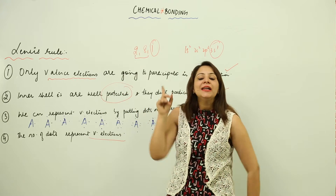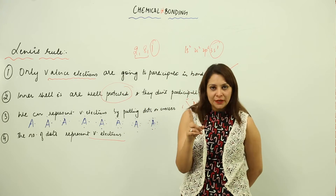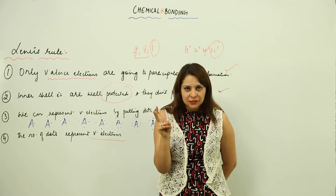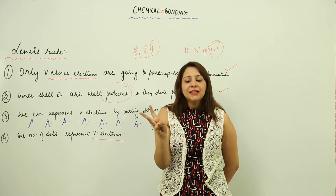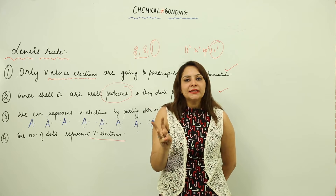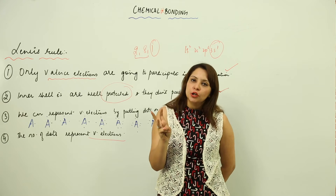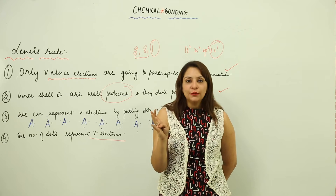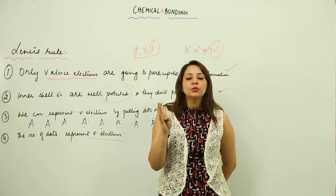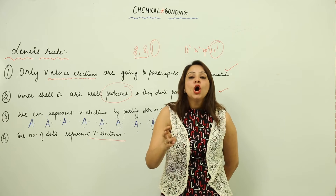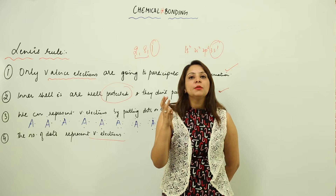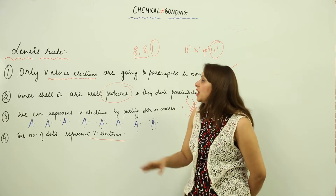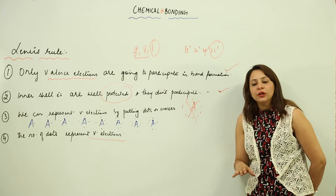So these are the Lewis rules we need to follow. First, only valence electrons are going to participate. Second, inner shell electrons will remain unaffected. Third, we represent valence electrons by putting dots or crosses. Fourth, by looking at the dots we can determine the valency or the number of valence electrons.